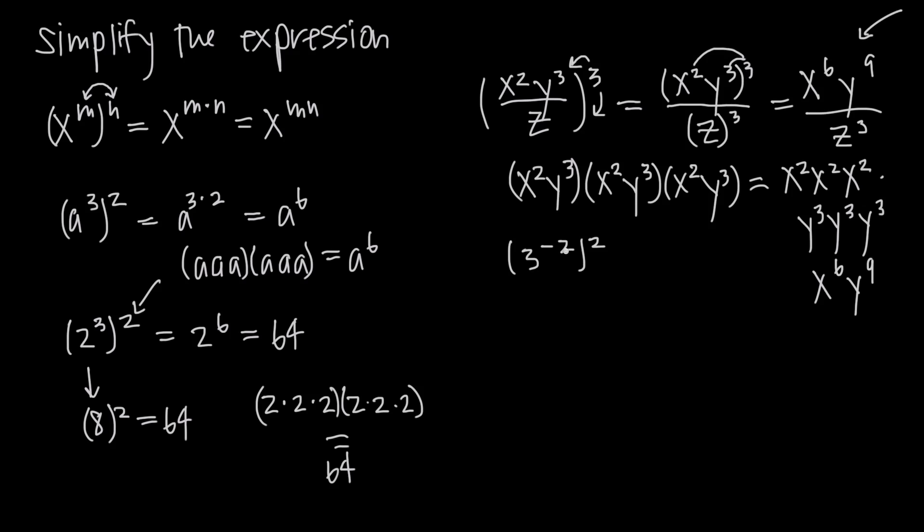So one final example here, we have 3 to the negative 2 all raised to the power of 2. This power rule works even with negative exponents. So if we just use power rule directly and we multiply our two exponents together, negative 2 times a positive 2 is a negative 4, so this becomes 3 to the negative 4.